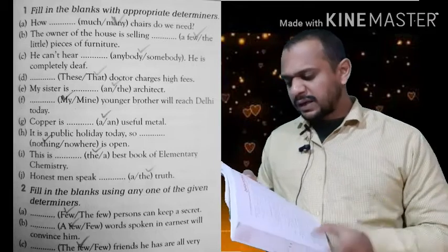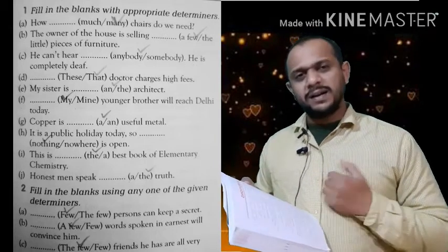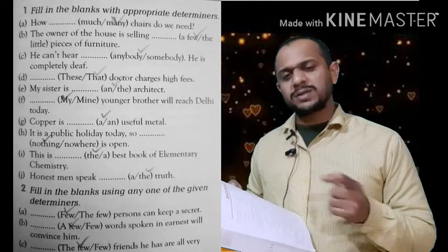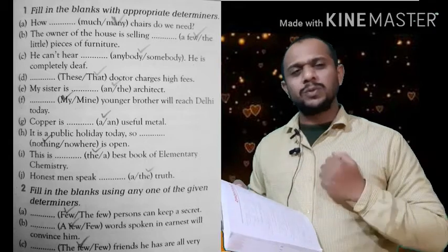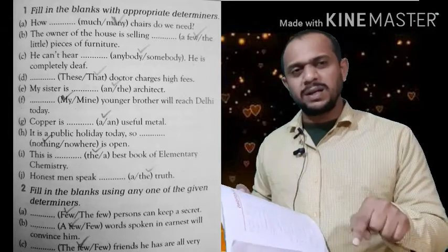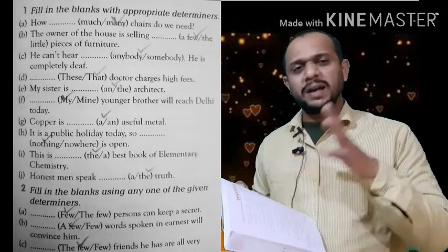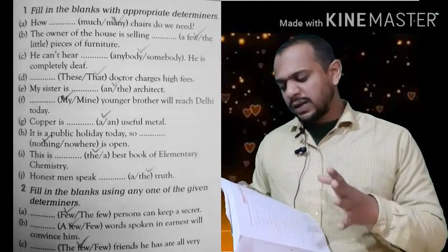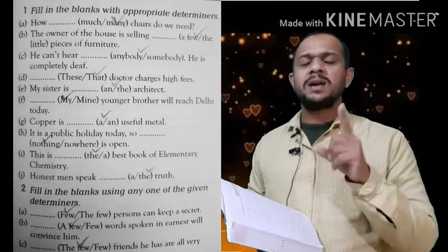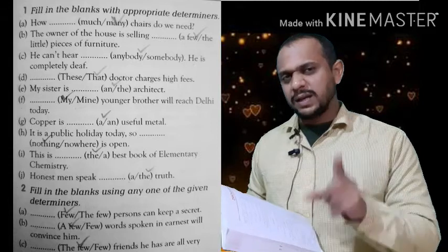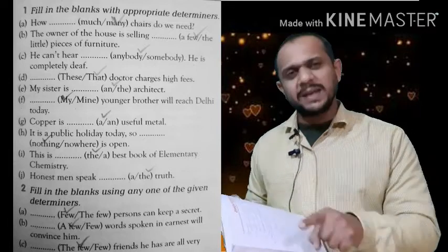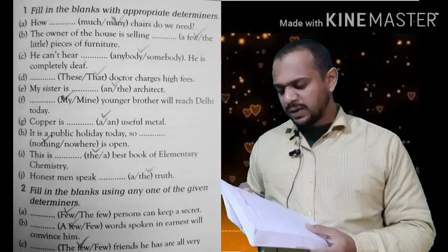Exercise: 'He cannot hear dash' — anybody or somebody? If we have a negative verb, we write 'anybody.' If we have positivity — 'he can hear somebody' — we use 'somebody.' But since we have 'cannot,' we keep 'anybody' in place of 'somebody.'